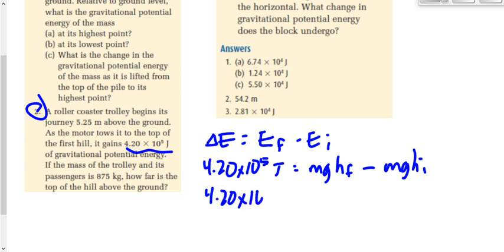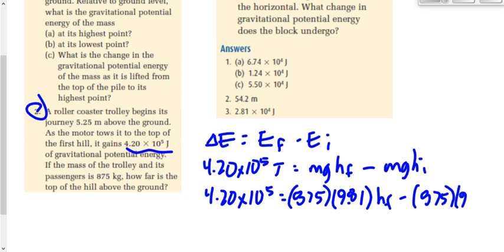4.20 times 10 to the 5 joules equals my mass is 875 times 9.81 times H_F. Do you agree with that so far? Okay. So we're going to minus from that 875 times 9.81. What's my initial height? 5.25.